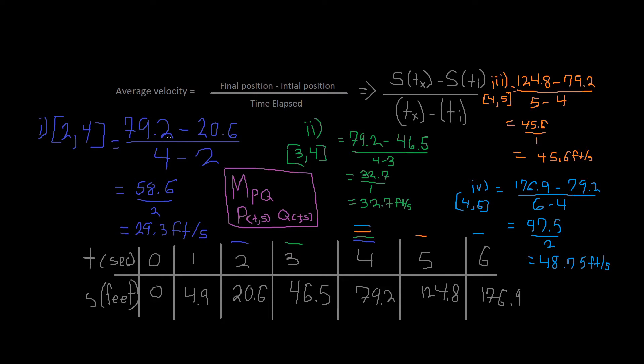So 79.2 minus 20.6, which is the initial position. And the time elapsed is 4 minus 2. So we just plug it in. And we end up getting 29.3 feet per second.